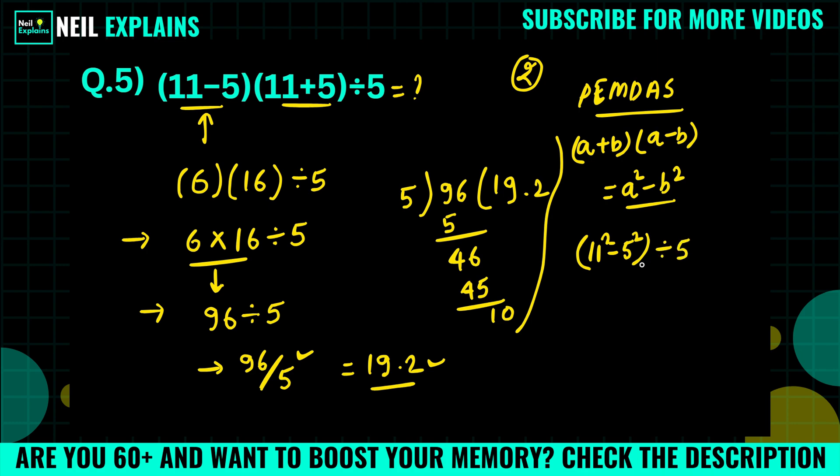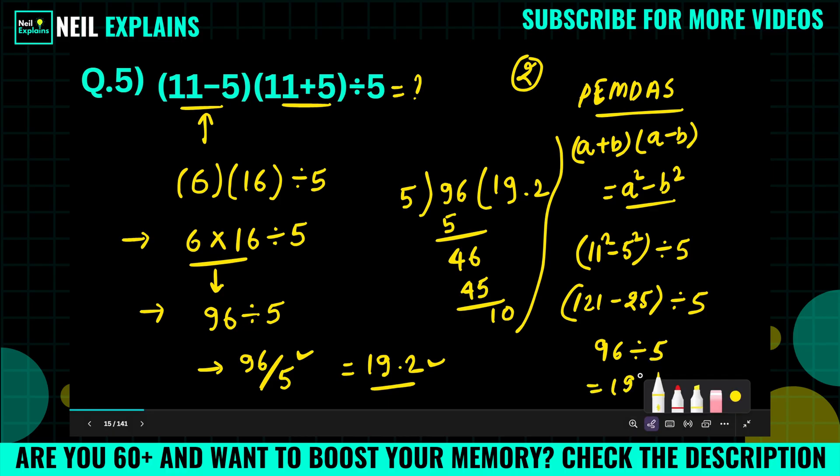And when you solve, this will be 121 and this one will be 25, divided by 5. And this one will get 96 by 5, and also 19.2.